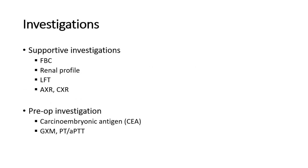Supportive investigations include blood tests such as full blood count, renal profile, and liver function tests, as well as erect and supine abdominal X-ray and erect chest X-ray if there is a perforated tumor to look for air under the diaphragm. The abdominal X-ray looks for intestinal obstruction. Pre-op investigations include the carcinoembryonic antigen level — the CEA test — and group cross-match and coagulation profile. CEA is a useful prognostic and surveillance tumor marker in colorectal cancer. However, false positive elevations can occur with smoking, inflammatory states such as pancreatitis, diverticulitis, or cholecystitis, and in cancers in other areas besides the colon.